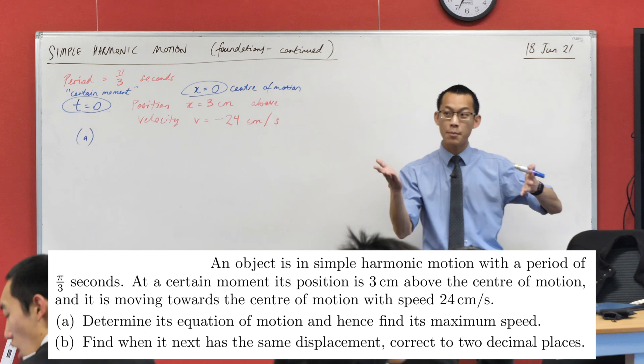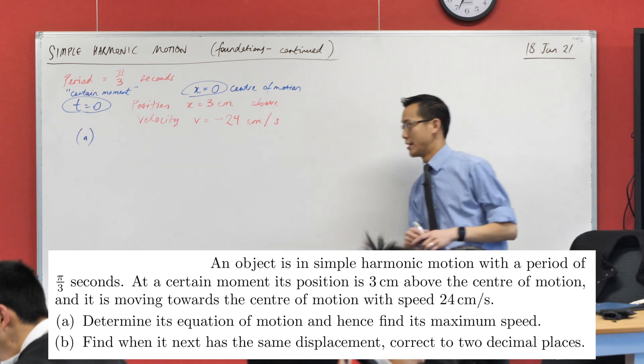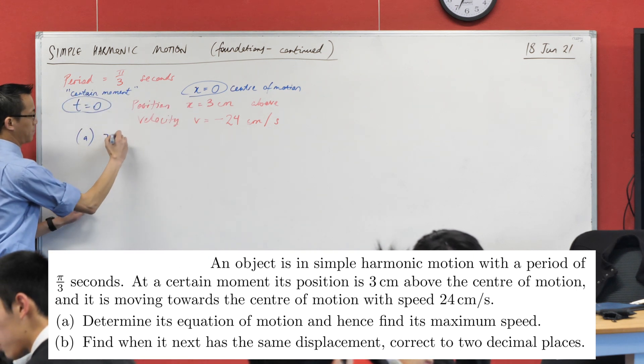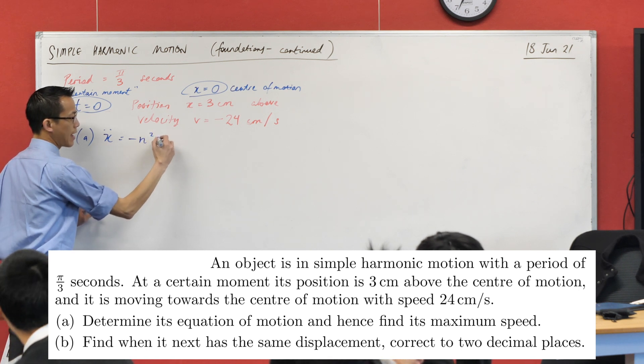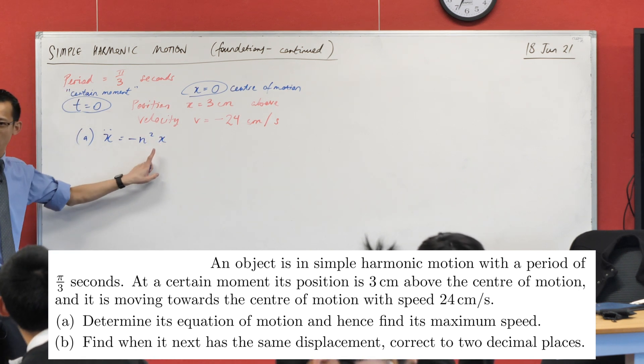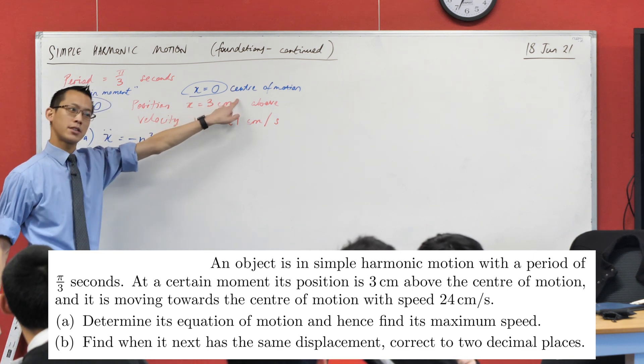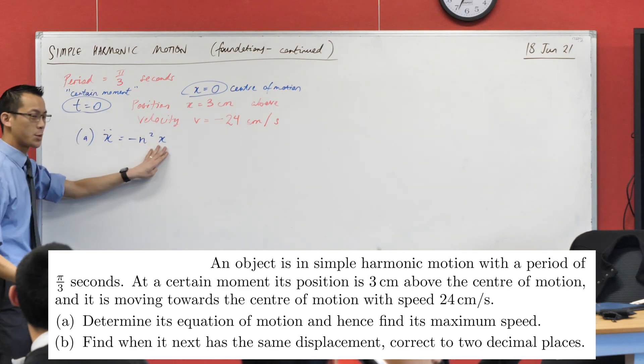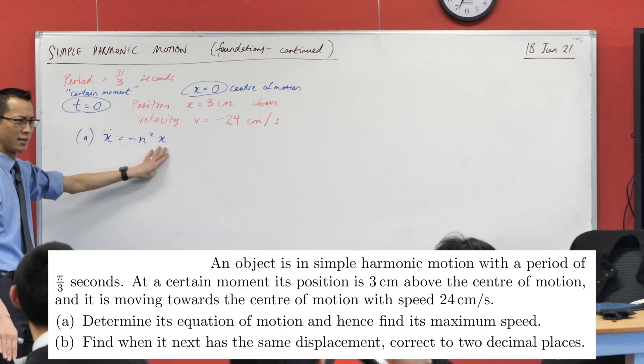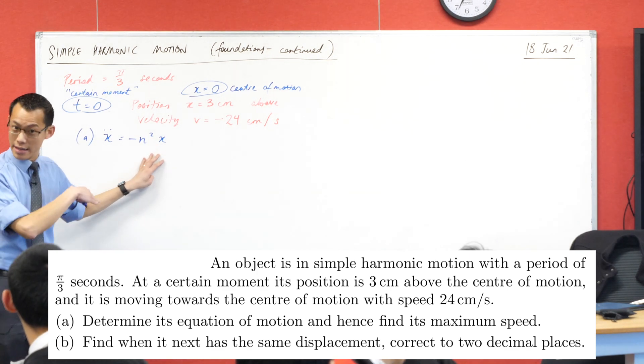So we know it's simple harmonic motion. I could write a differential equation. I could say x double dot equals negative n squared x. Now just remember, I actually can write x, and not just x minus C, because I've already specified a center of motion. And if I say it can be at the origin, then I can use my simple version of simple harmonic motion. The most basic form.